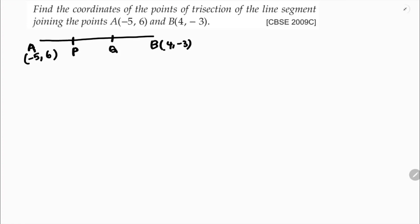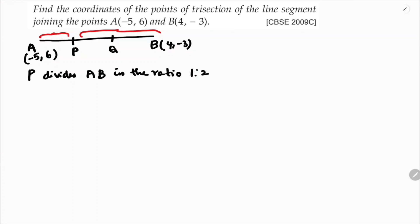P divides AB in the ratio 1:2 — before P there is one part, and after P there are two parts. Q divides AB in the ratio 2:1 — before Q we have two equal parts and after Q we have one equal part.